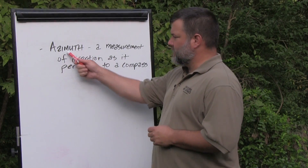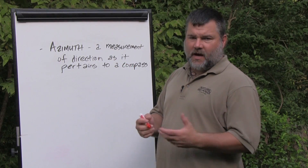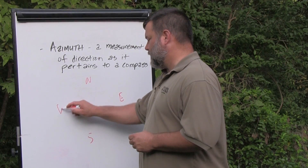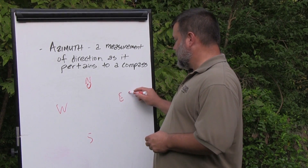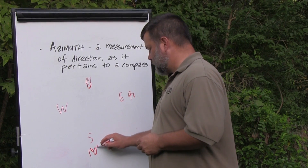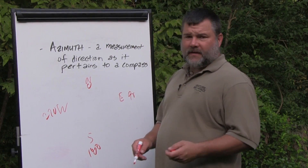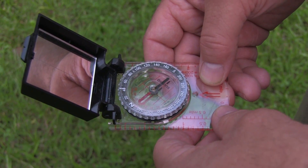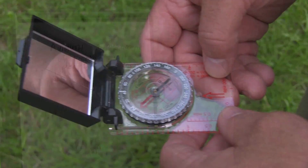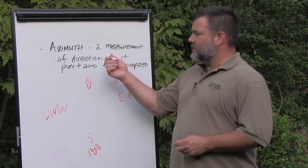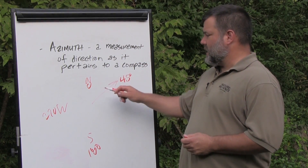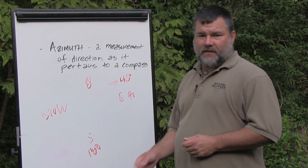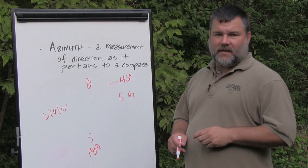Let's take a look at azimuth first. Azimuth is a measurement of direction as it pertains to a compass. On a compass you have north, east, south, and west. North is zero, east is 90, south is 180, and west is 270. So if we take a measurement with our compass — let's say 45 degrees — that is an azimuth. We're breaking direction from zero all the way through 360 degrees, and that specific number is our azimuth.